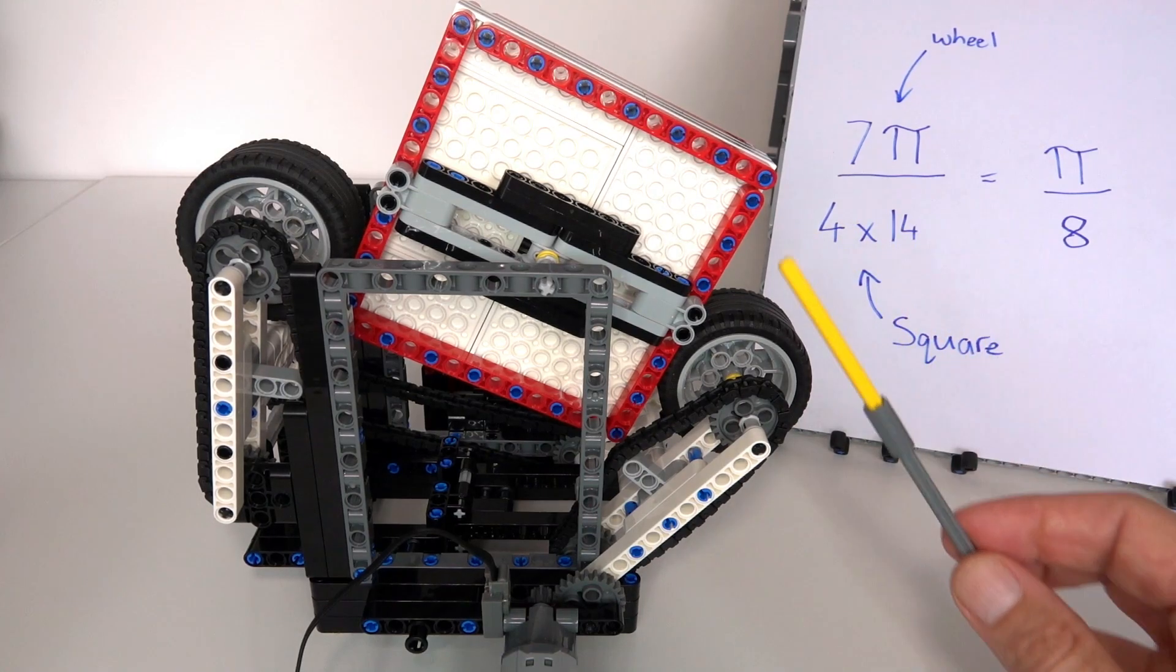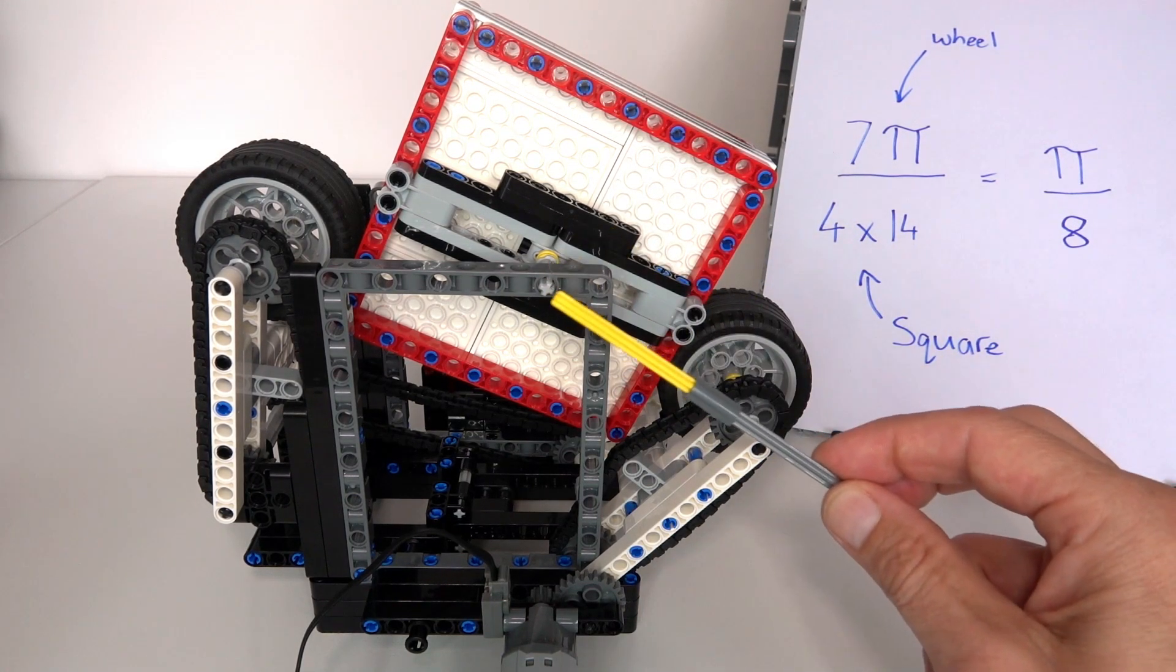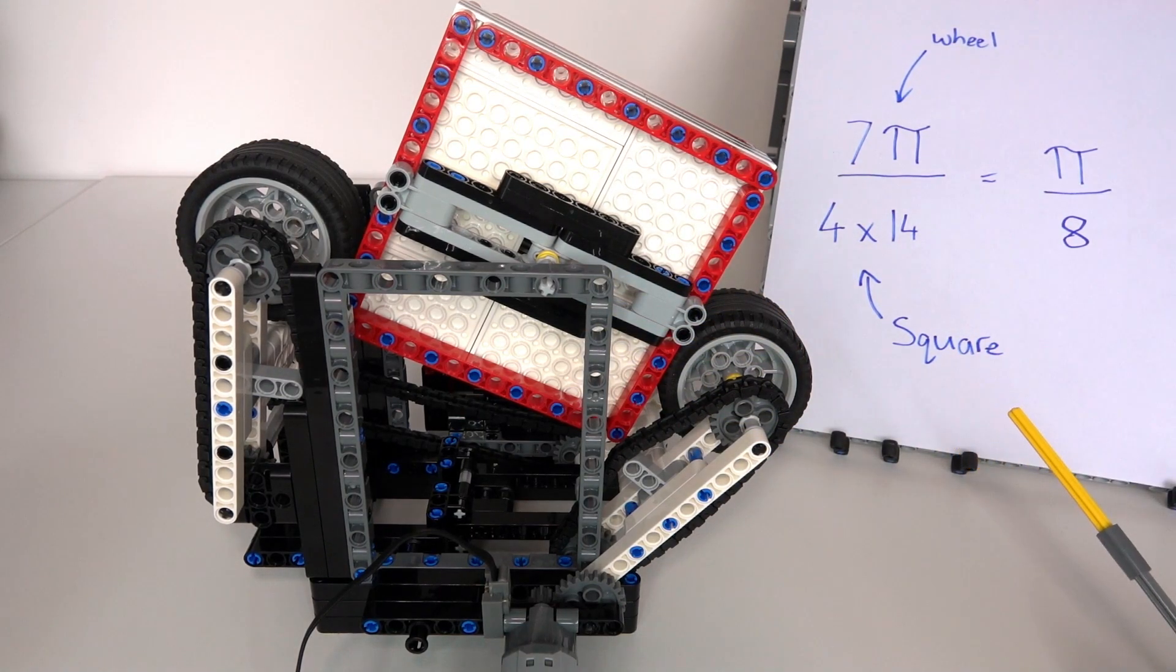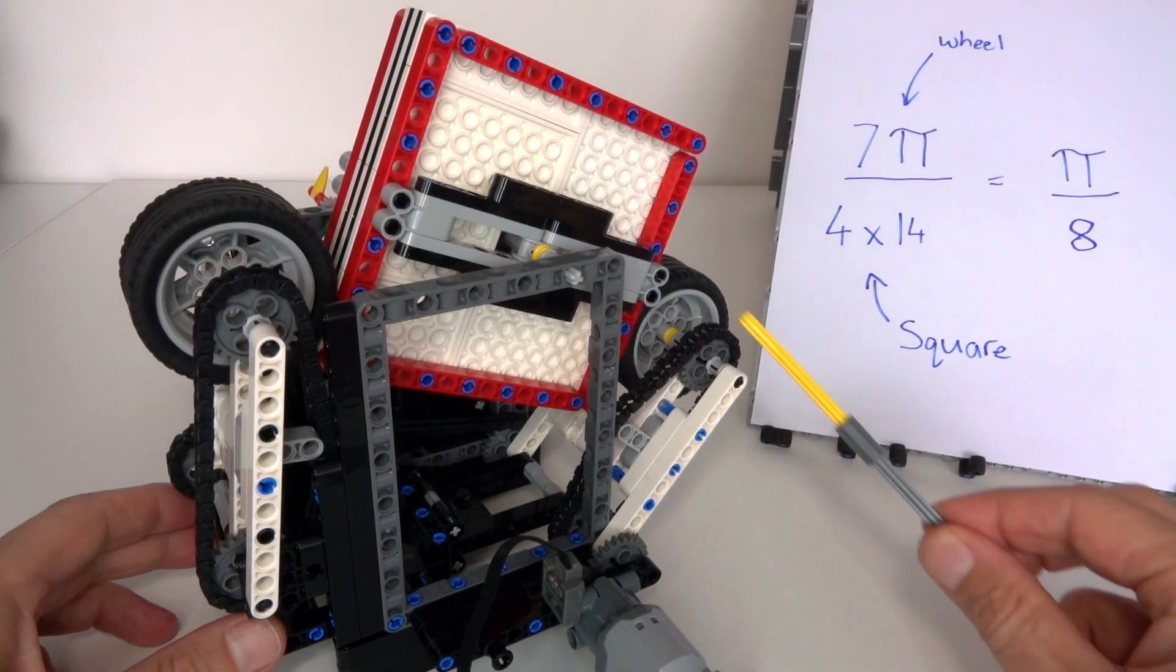You can simply multiply that final ratio at the output by eight to get pi itself. What that means is the gearing ratio between this point and this point, or between those axles, is pi over eight.